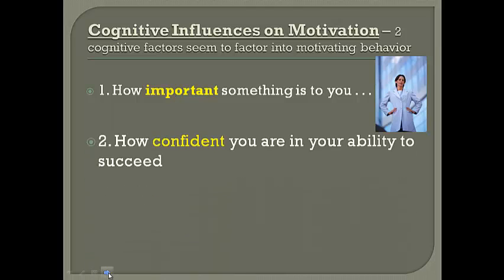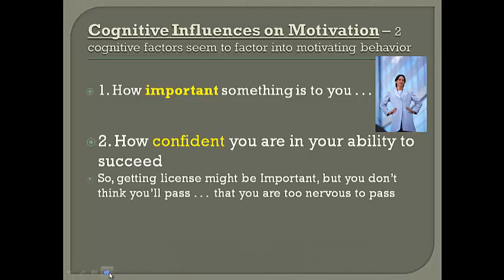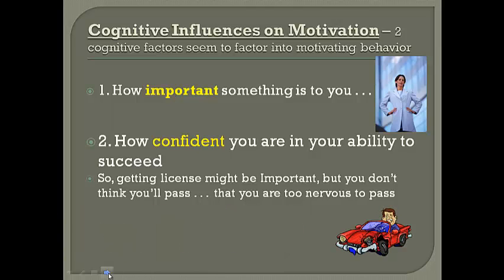Secondly is our confidence level — how confident are you in your ability to succeed and attain that goal you actually want? So if something is very important to you but you're not very confident, you might not work very hard to achieve it. For example, getting your driver's license might be really important to you, but if you don't think you're a good driver, you might be too nervous to pass that test. So importance and confidence levels do interact.